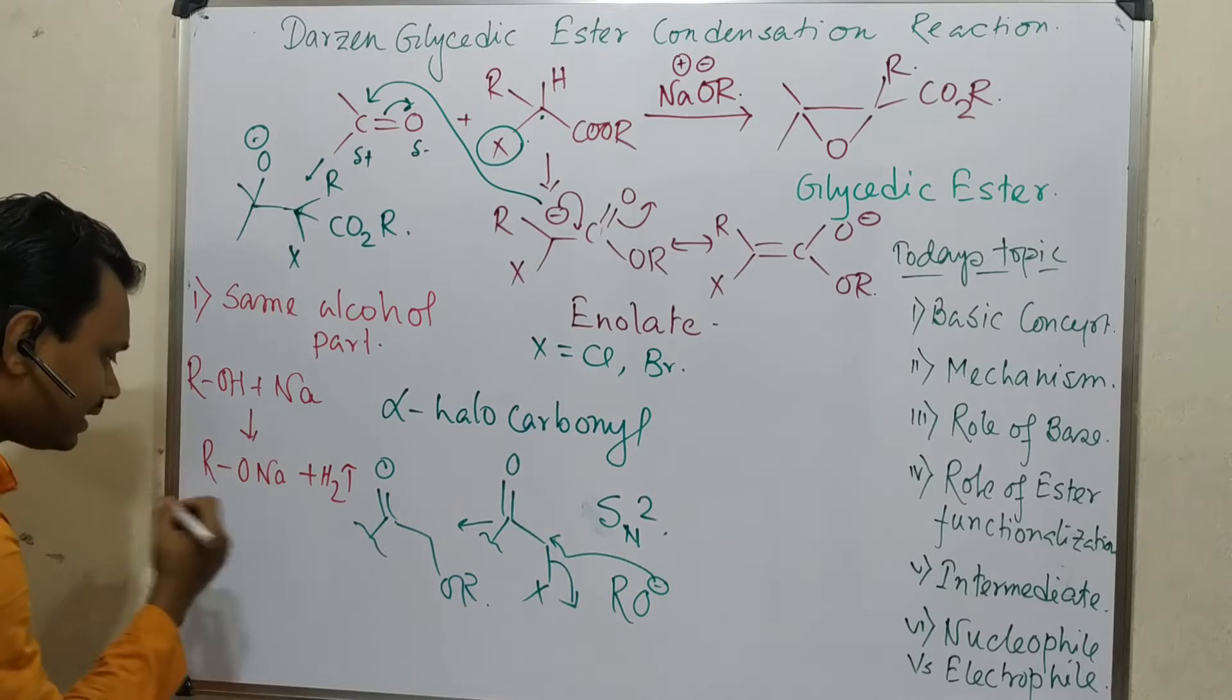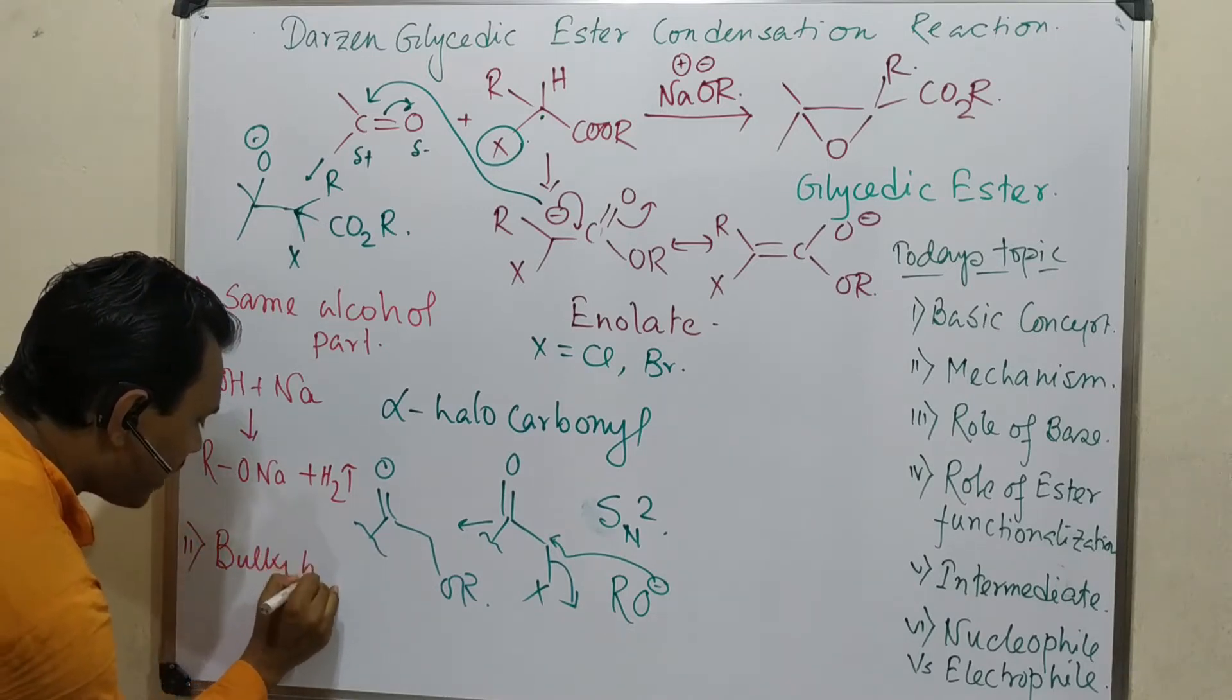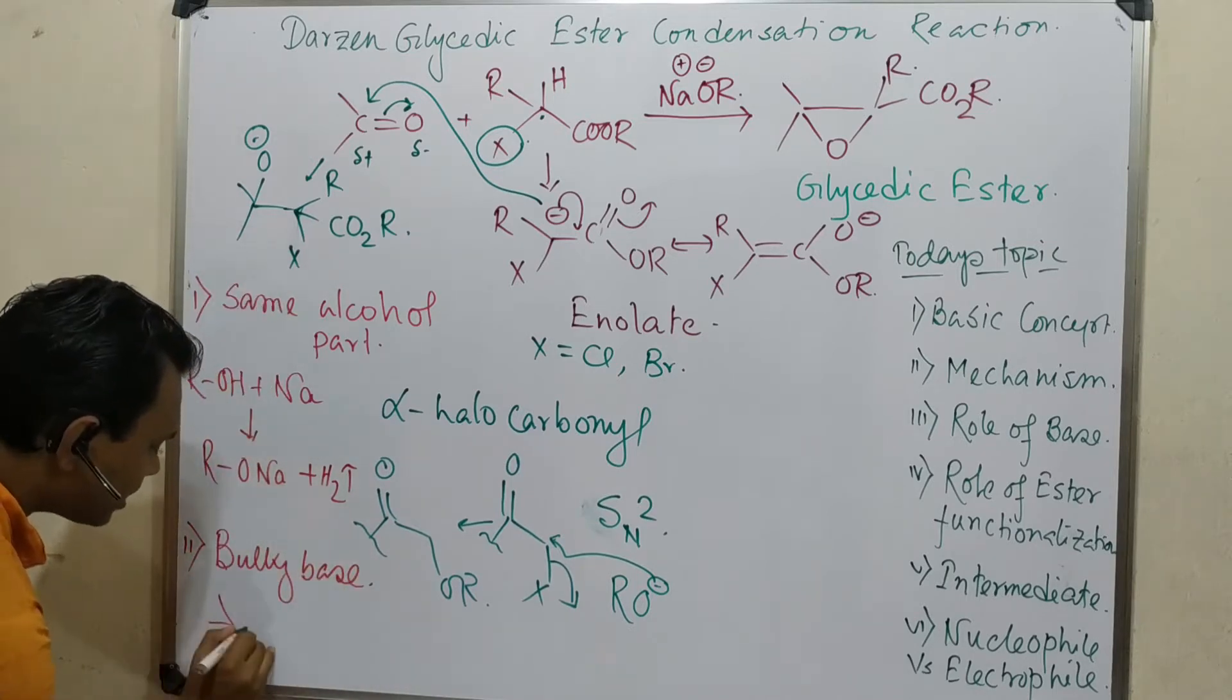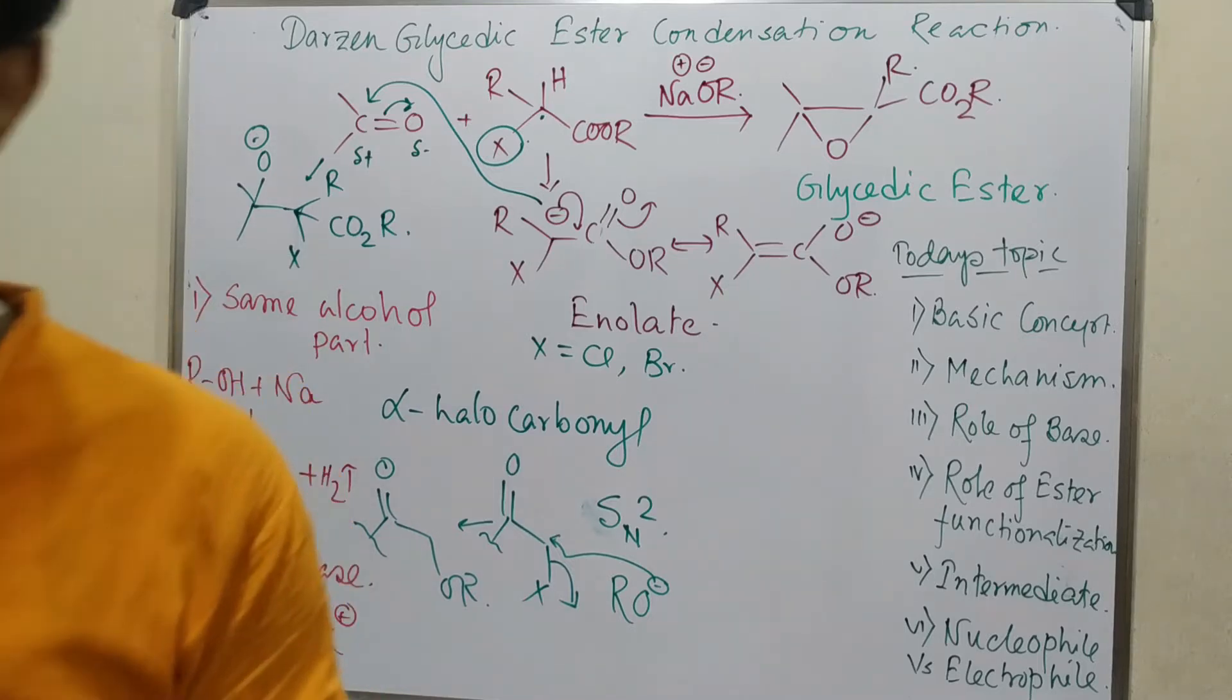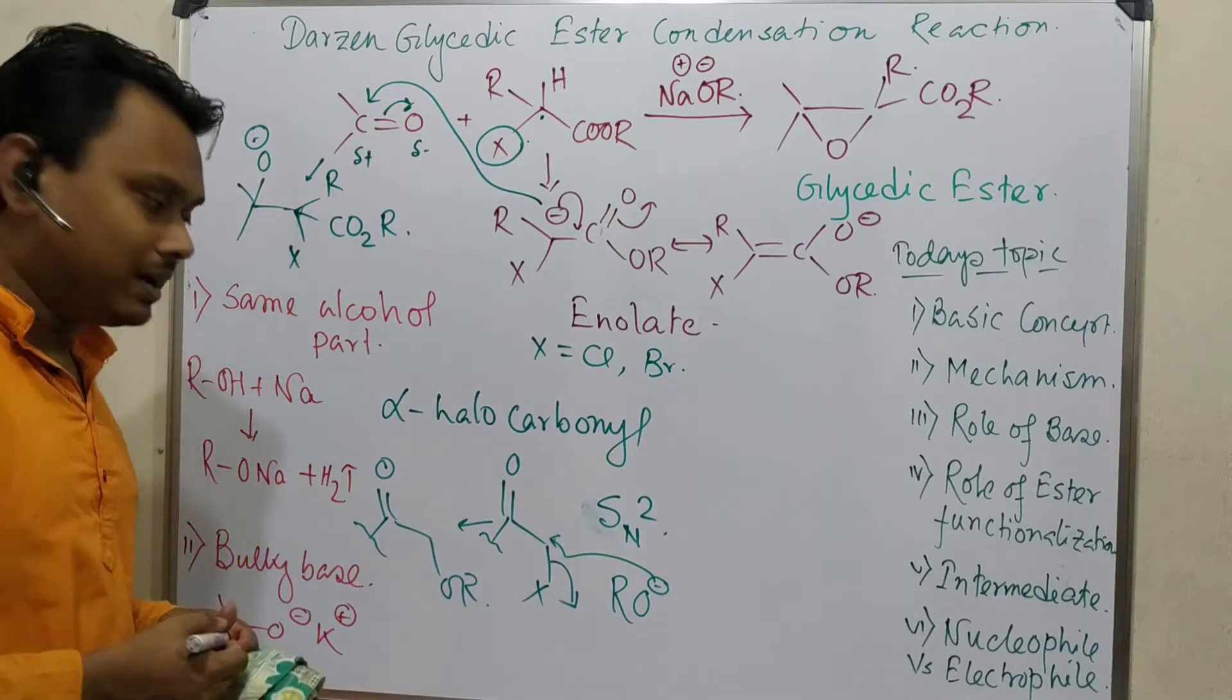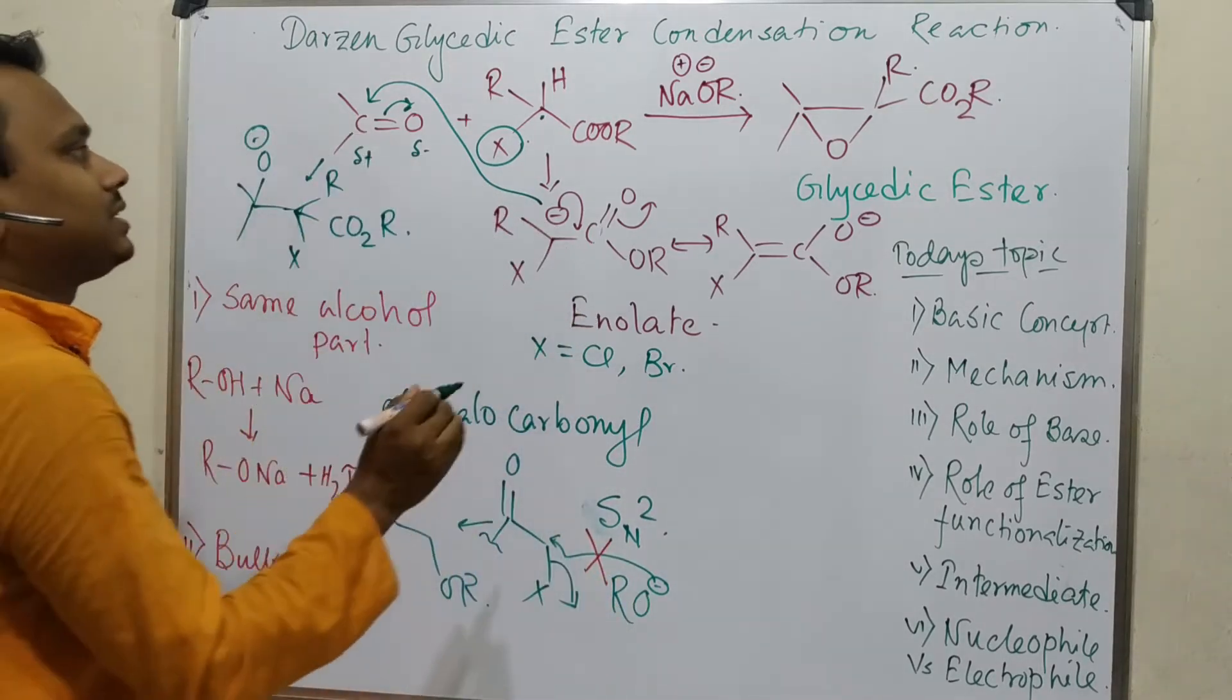Second is the same alcohol part. And second, we can take that bulky base, like potassium tertiary butoxide. What is the point? Because we know this bulky base, like potassium tertiary butoxide, they can act only as base because of bulkiness, not as nucleophile. So this chance will be nullified.